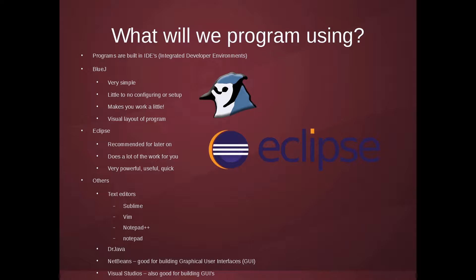Some other programs you can use: Dr. Java is even more simplified than BlueJ, but I think it's a little too simplified — you can write a Java file, but it's not easy to make bigger, more complex programs with it. NetBeans is really used for building GUIs in Java. You can build GUIs using BlueJ too, and I'll show you how to do that manually using code. However, NetBeans is designed to be a drag-and-drop way of making GUIs very quickly — you drag a button on screen and it auto-populates the code.